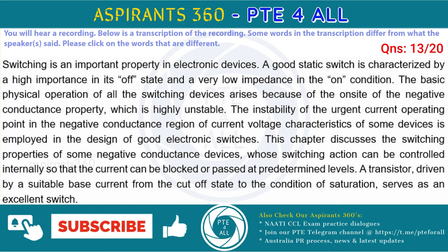Switching is an important property in electronic devices. A good static switch is characterized by a high impedance in its off state and a very low impedance in the on condition. The basic physical operation of all the switching devices arises because of the onset of the negative conductance property, which is highly unstable. The instability of the direct current operating point in the negative conductance region of current-voltage characteristics of some devices is employed in the design of good electronic switches. The chapter discusses the switching properties of some negative conductance devices, whose switching action can be controlled externally so that the current can be blocked or passed at predetermined levels. A transistor, driven by a suitable base current from the cut-off state to the condition of saturation, serves as an excellent switch.